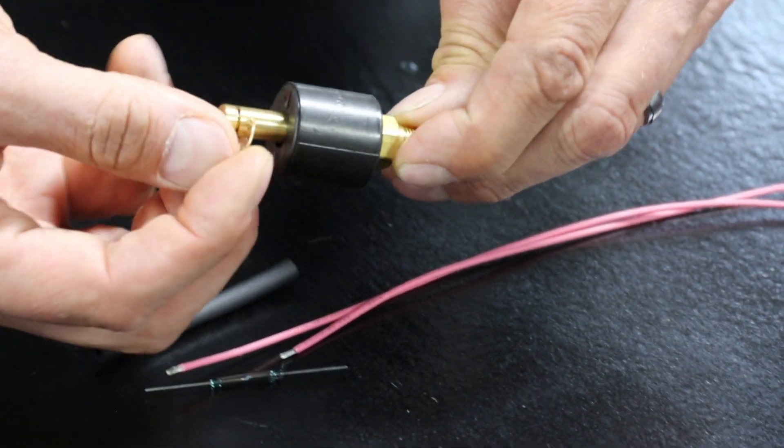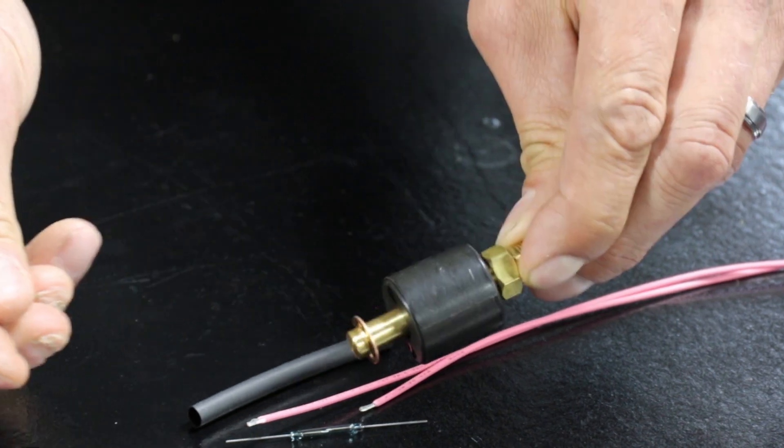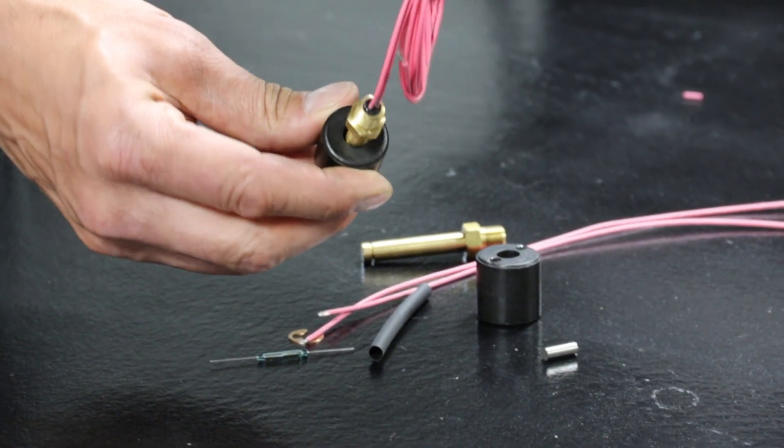To assemble, we insert the shaft into the float and clip it in place. Here's the float switch fully assembled.